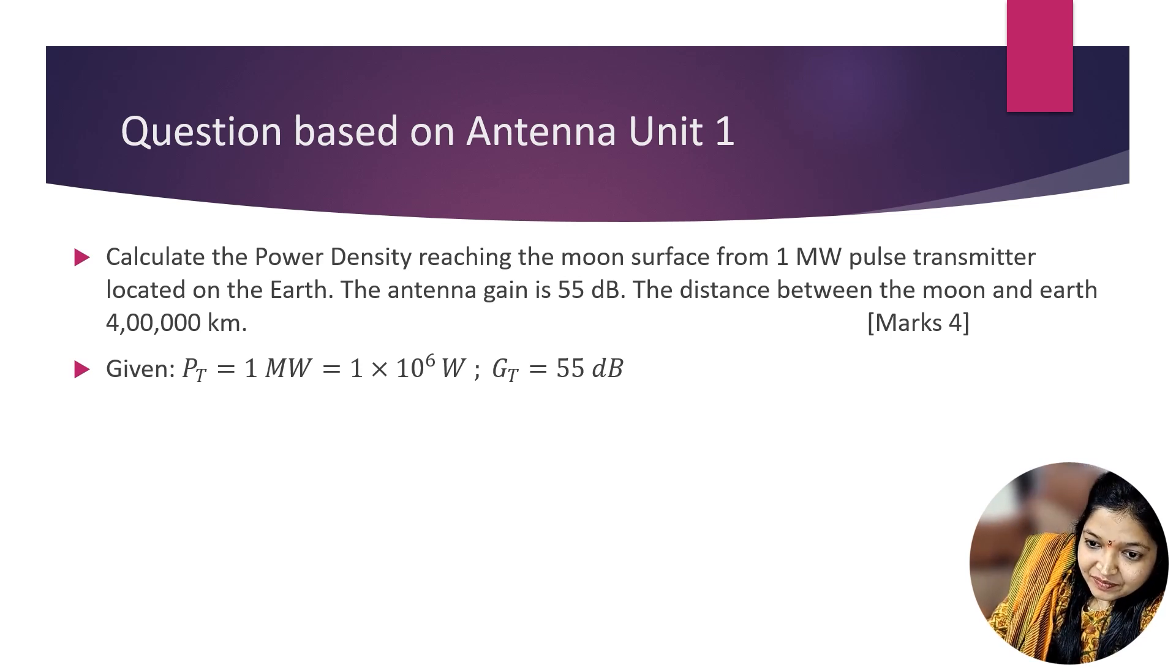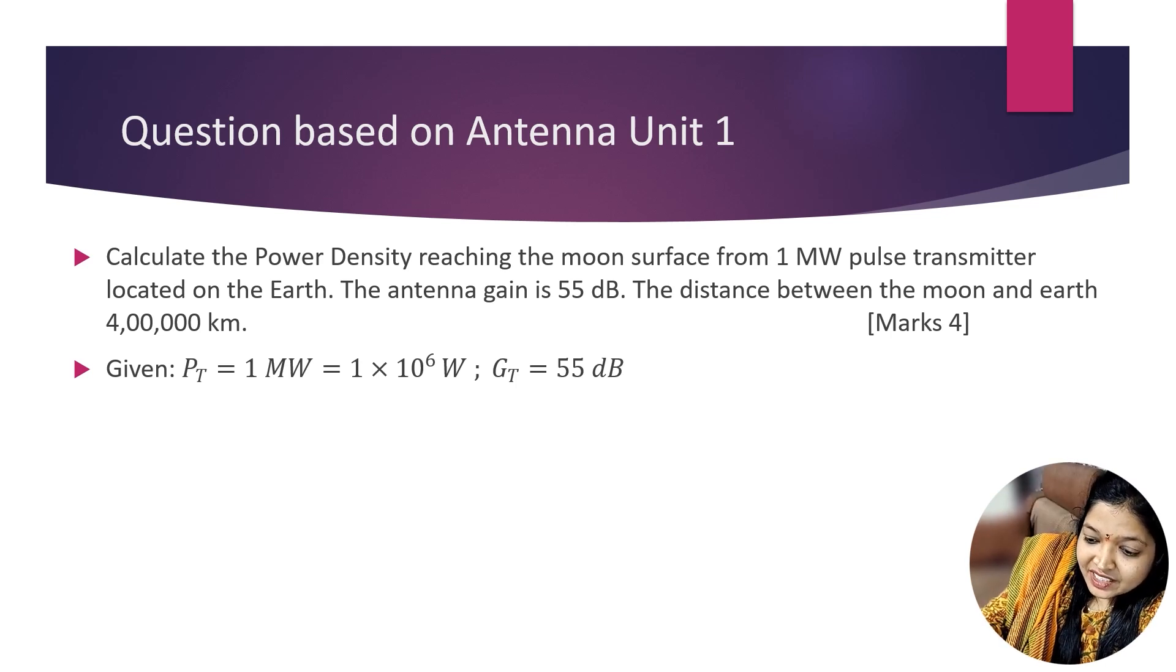Given: pulse transmitted power PT = 1 megawatt = 1×10⁶ W, and antenna gain GT = 55 dB. Distance is given.